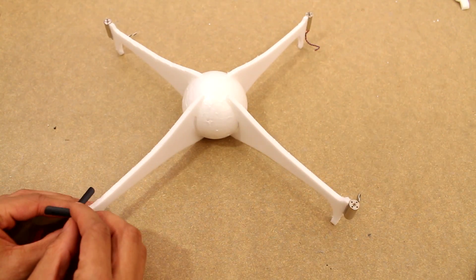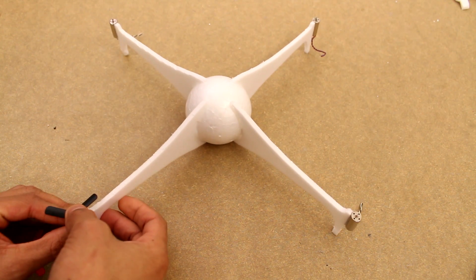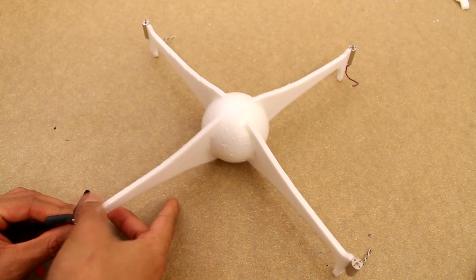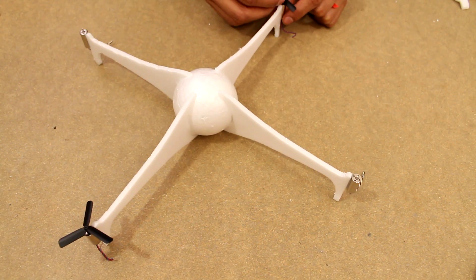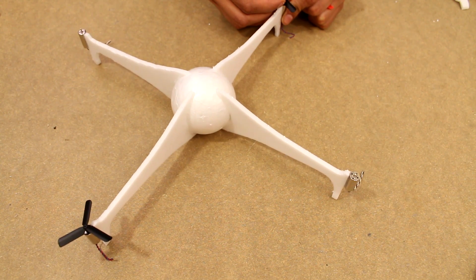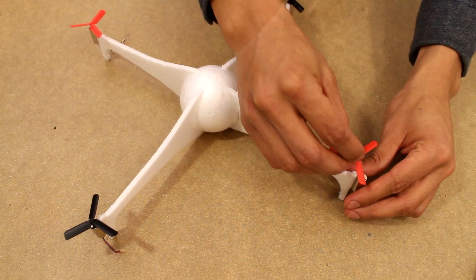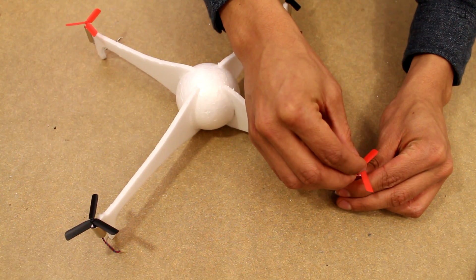Now we're going to put propellers on. If you look at the propellers, you'll notice some of them spin in different directions, so you end up having two clockwise and two counterclockwise. The two red ones in our case are clockwise and the two black ones are counterclockwise.